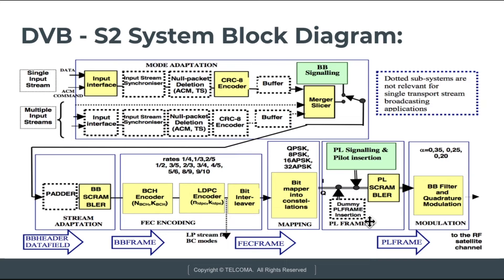In the PL framing system, PL signaling and pilot insertion are performed, and a PL scrambler is also formed here. A dummy PL frame is also inserted at this stage. After forming the PL frame, the PL frame proceeds to the baseband filter and quadrature modulation system.